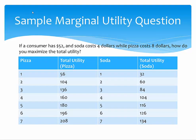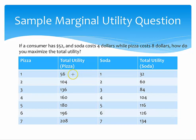Here is a sample marginal utility problem that the AP test might ask you. In this scenario, the consumer has $52 and wants to maximize utility. Soda costs $4, while pizza costs $8. We have the total utility per pizza and per soda. First, we need to calculate the marginal utility for all of them. The marginal utility for the first unit of pizza is 56, because initially at zero pizza there's zero utility. From consuming one pizza you get 56 utility. The next is 48. For the third, the total utility is 104, so you subtract 56 to find the marginal utility. You use marginal utility because that's how much additional utility you get from consuming that unit.